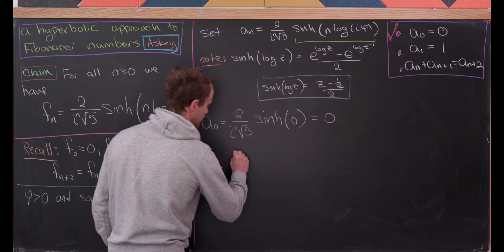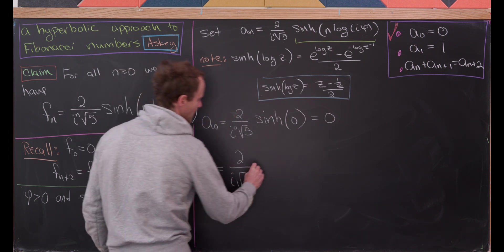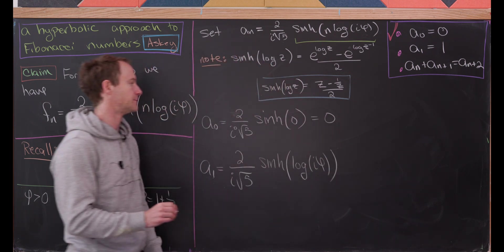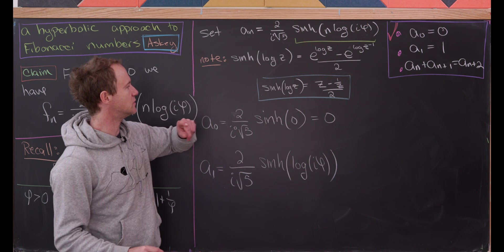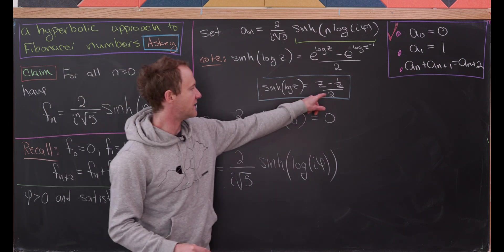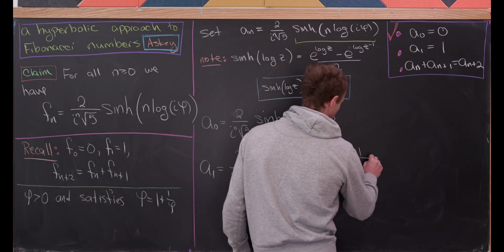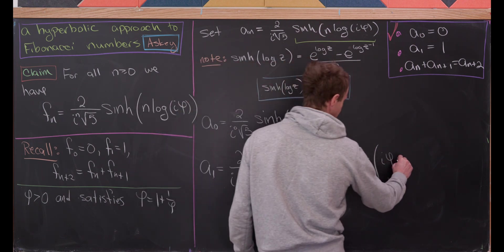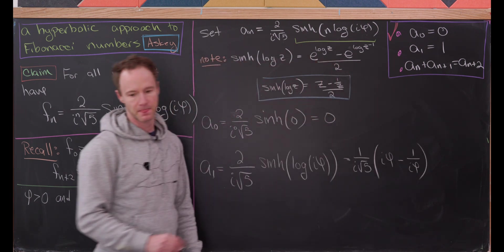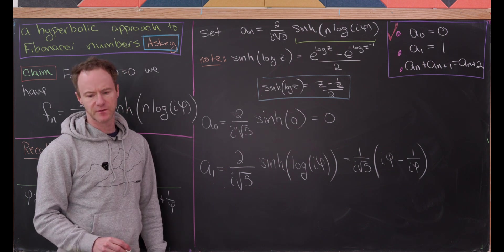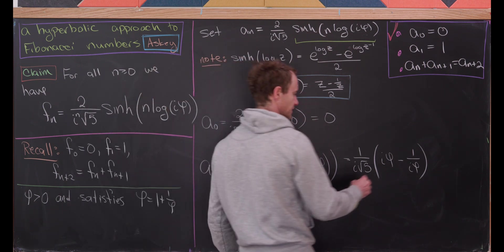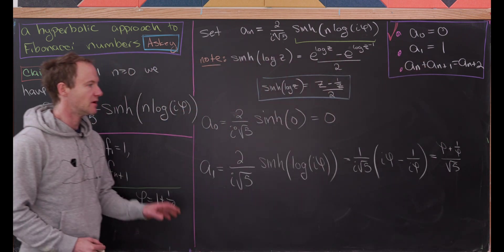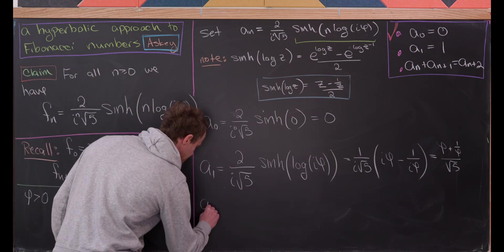Now let's look at A₁. That'll be 2 over i times the square root of 5, times the hyperbolic sine evaluated at the log of i times phi. Plugging into our formula, the 2's cancel, leaving 1 over i times the square root of 5, times i times phi minus 1 over i times phi. Bringing the i inside, that gives us phi plus 1 over phi, all over the square root of 5.